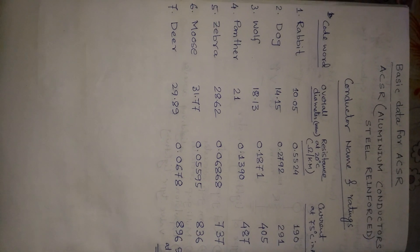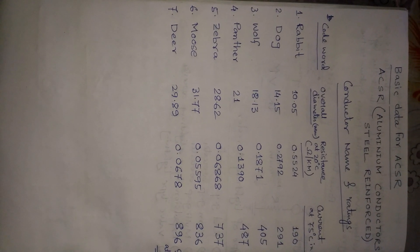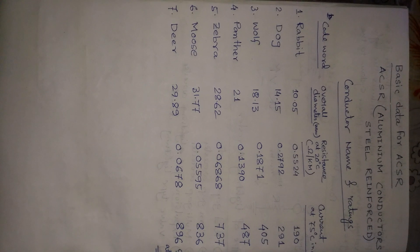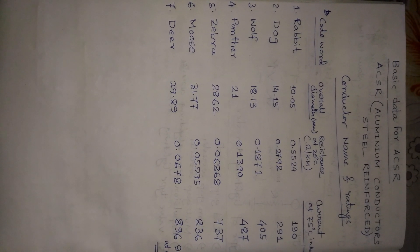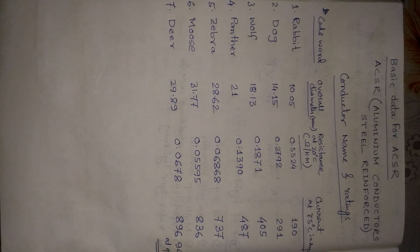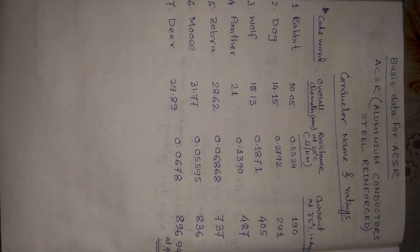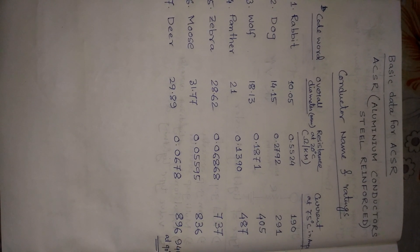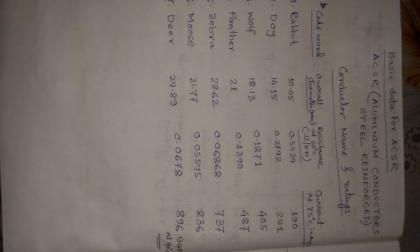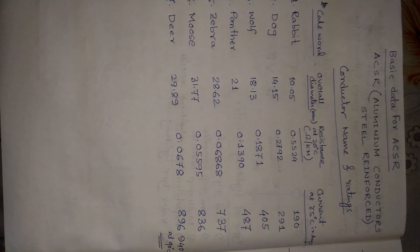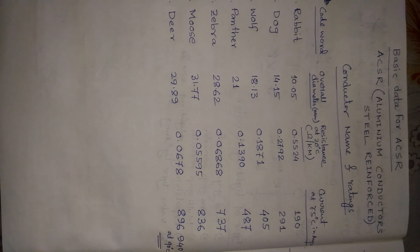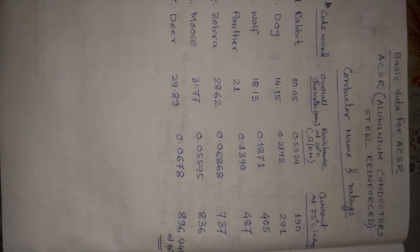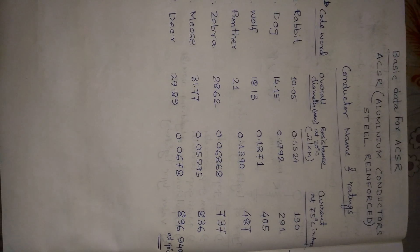Zebra conductor: Overall diameter is 28.62 mm. Resistance at 20 degrees Celsius is 0.06868 ohms per kilometer. Current carrying capacity at 75 degrees Celsius is 737 amperes.